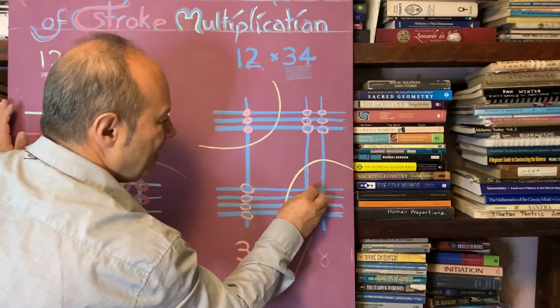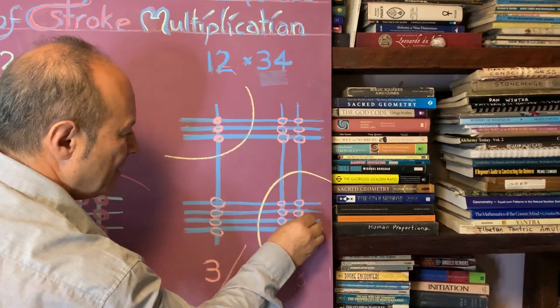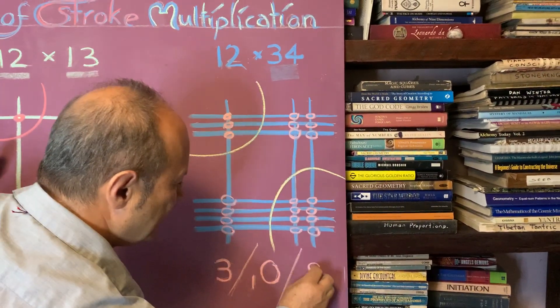And how many do we have over here? We've got one, two, three, four, five, six, seven, eight. There's eight there. So I write the eight.